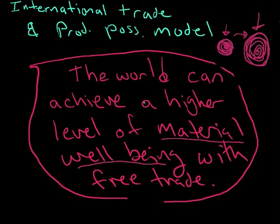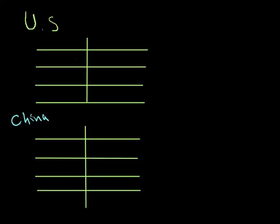That's the conclusion of economists, and they prove it with a very simple concept, a very simple model, and it uses the production possibility ideas. Imagine the United States here, and imagine China here. And this chart is going to be a depiction of their production possibilities, the things that they can make.